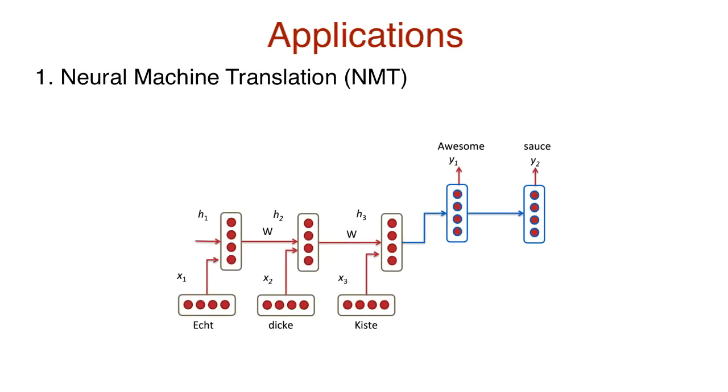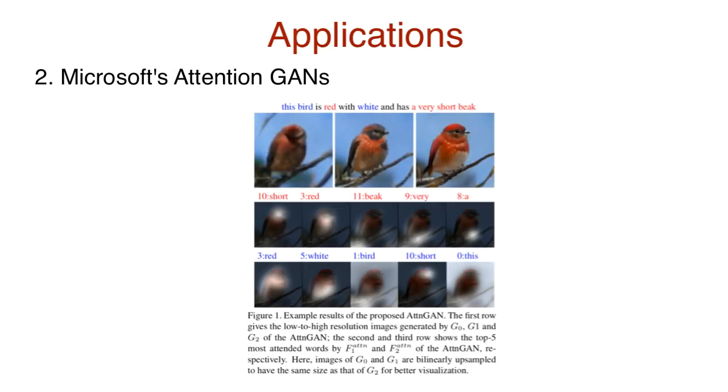So where else can we use attention? Attention is not only used for image inputs. For example, neural machine translation, NMT systems, they are used to translate one language to another. Words are fed in a sequence to an encoder one after another, and the sentence is terminated by a specific input word or symbol. Once complete, the special signal initiates the decoder phase where the translated words are generated. Another cool application would be Microsoft's Attention Generative Adversarial Networks, or Microsoft's AttentionGAN, that can create images from text through natural language processing.